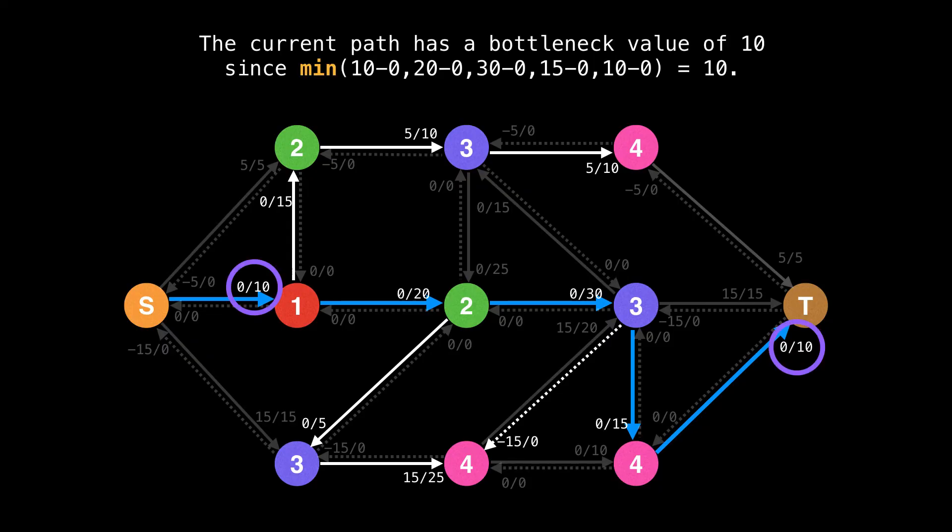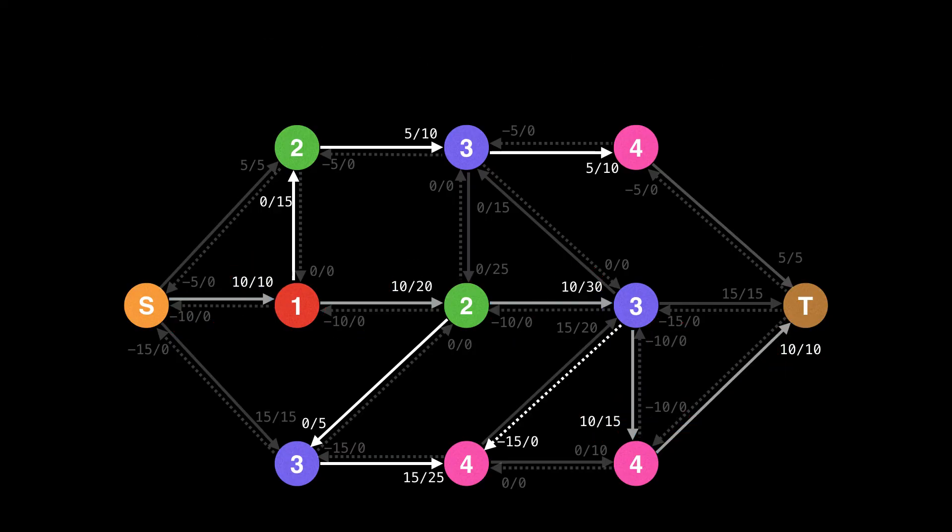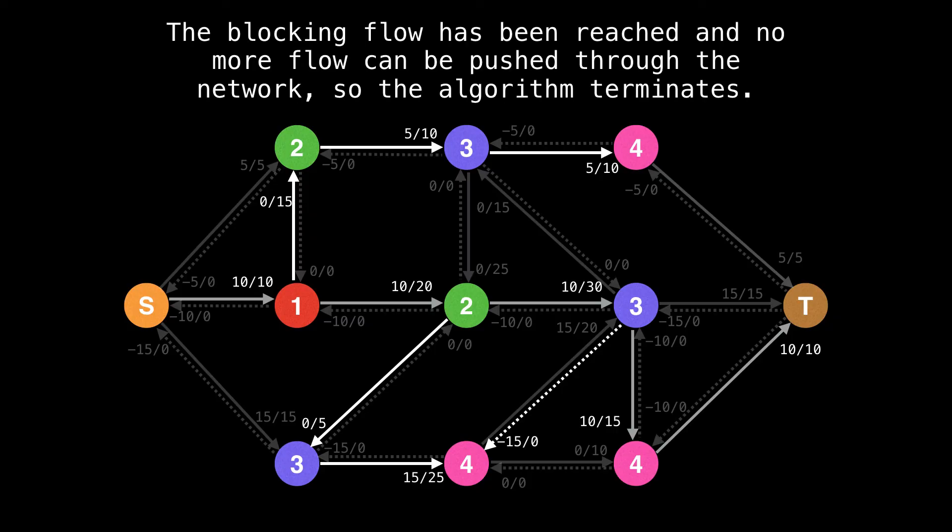Perfect, we made it to the sink. The current path has a bottleneck value of 10. Now augment the flow by 10 units. And now if you inspect the flow graph, you will notice that the blocking flow has once again been reached. Now no more flow can be pushed through the network when we build a level graph, which means the algorithm terminates.